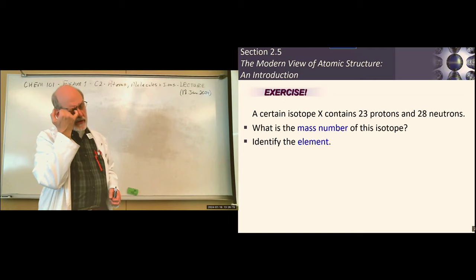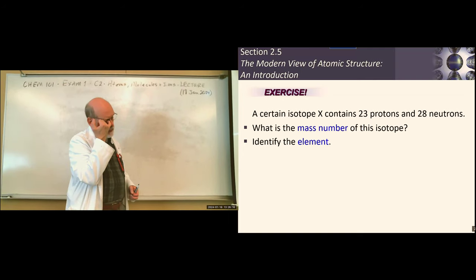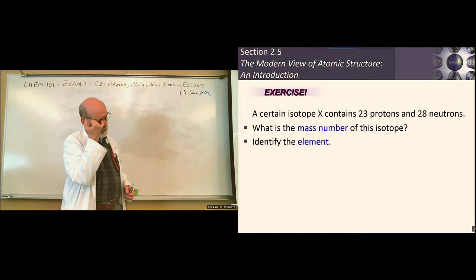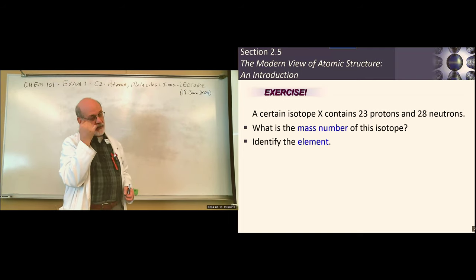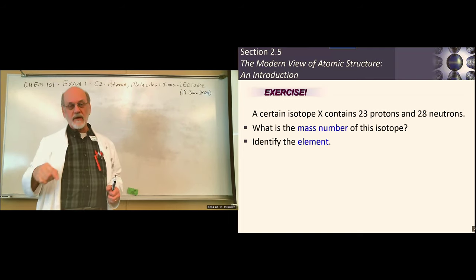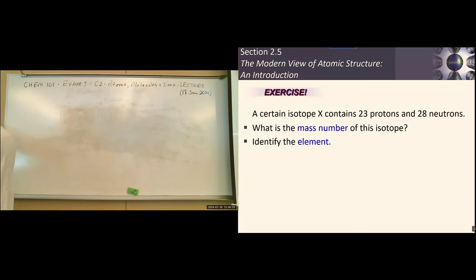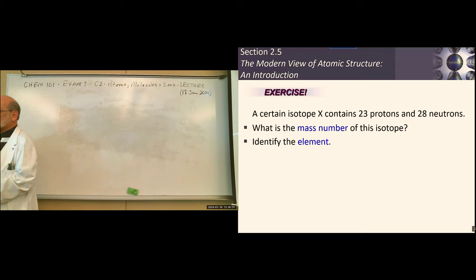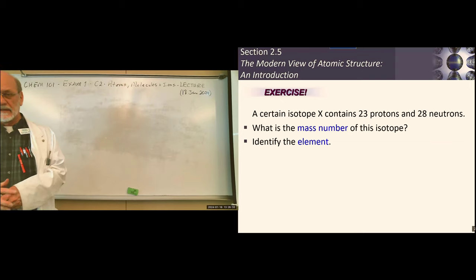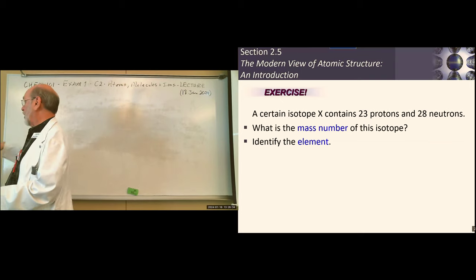One of the reasons to learn the symbols is that if you know the symbol and its element, you can always go to the periodic table and find the atomic number — the Z value — which tells you the number of protons. The atomic number is always a whole number; the atomic mass on the table will appear as a fraction — we'll explain why later.